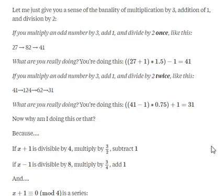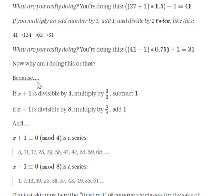Now why am I doing this or that? Because you can now reduce the function to three operations, of which I'm going to show two here. If x+1 is divisible by 4, multiply by 1.5, 3 over 2, subtract 1. If x-1 is divisible by 8, multiply by 3 quarters and add 1.